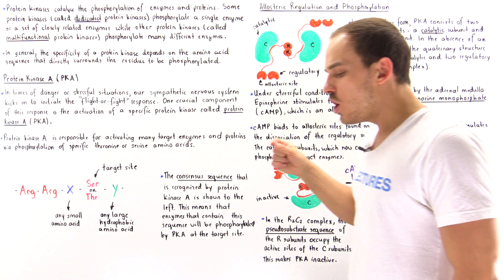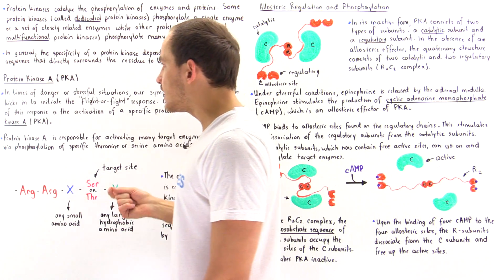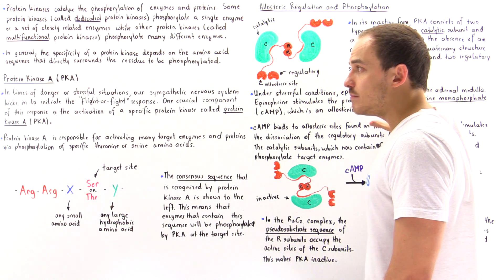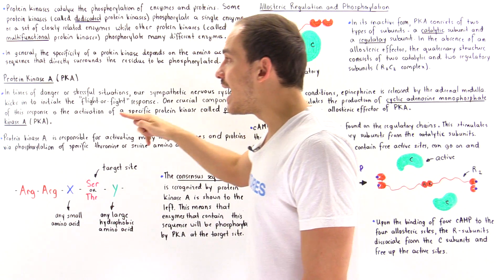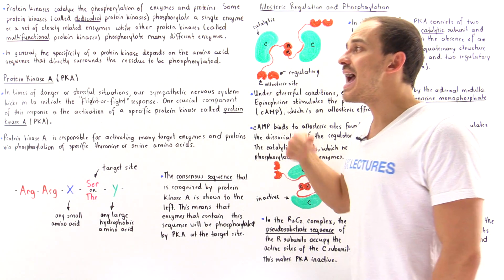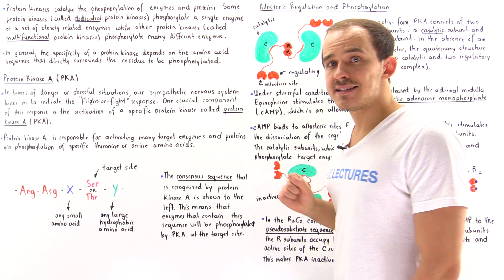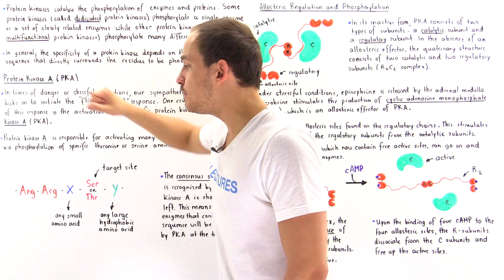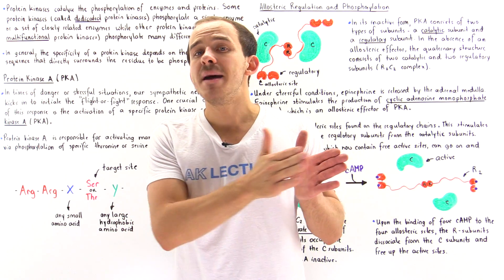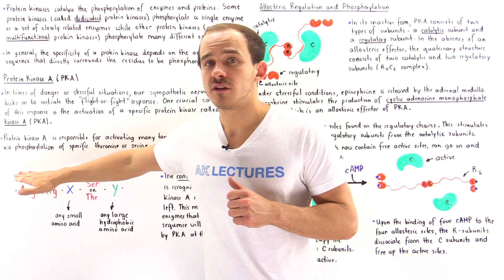What cAMP does is act as an allosteric regulator of protein kinase A. It binds onto the inactive version of protein kinase A and activates it. Once activated, protein kinase A becomes responsible for activating many different types of enzymes via the process of phosphorylation.